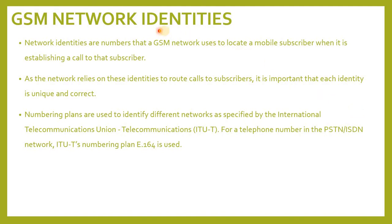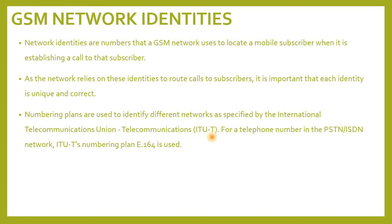GSM Network Identities are numbers that a GSM network uses to locate a mobile subscriber when it is establishing a call to that subscriber. As the network relies on these identities to route calls to subscribers, it is important that each identity is unique and correct. Numbering plans are used to identify different networks as specified by the International Telecommunications Union, ITU-T, and the E.164 numbering plan is used for telephone numbers in the PSTN and ISDN network.